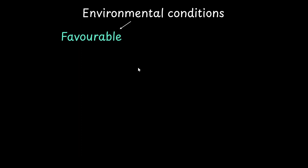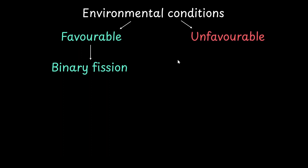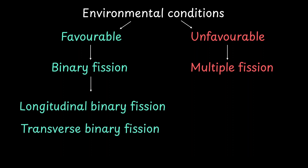The type of fission that occurs in these organisms depends on environmental conditions. If the environmental conditions are favorable for growth of the progeny, it leads to binary fission, where the single parent divides into two progeny. But if conditions are unfavorable, the organism cannot divide at will; it passes through the unfavorable condition and then divides by multiple fission, where a single parent divides to give multiple progeny. Binary fission can further be of two types: longitudinal and transverse binary fission.